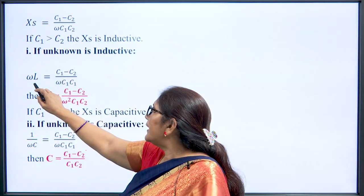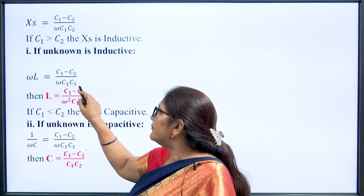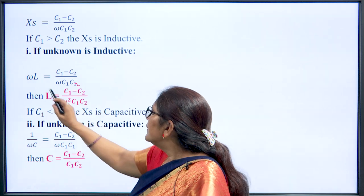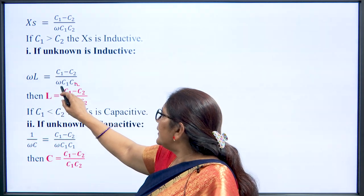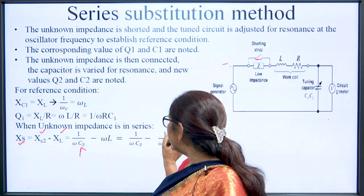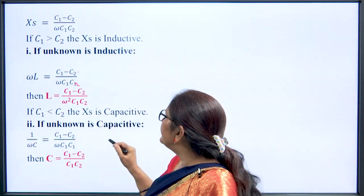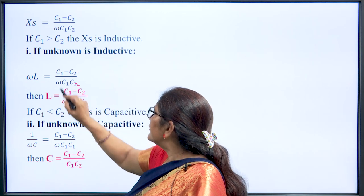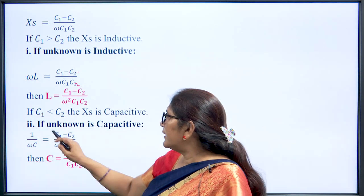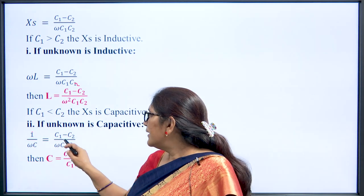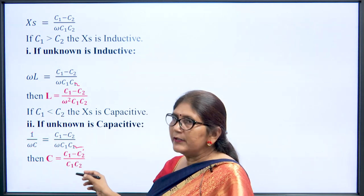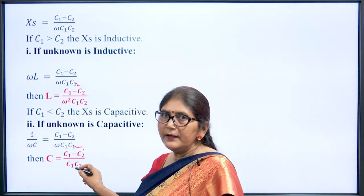If inductive, ωL = (C1 − C2)/(ω·C1·C2), so L = (C1 − C2)/(ω²·C1·C2). If the unknown is a capacitance, substituting 1/(ω·Cp) for the reactance and cancelling ω gives Cp = (C1·C2)/(C1 − C2). The resistance can also be found: R1 = X1/Q1 before connection and R2 = X2/Q2 after, so the unknown resistance equals R2 − R1 = X2/Q2 − X1/Q1.